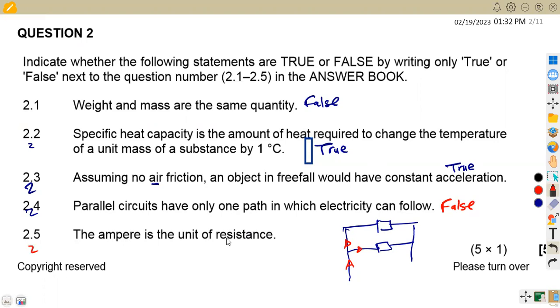The ampere is the unit of resistance. This is false. The ampere is the unit of current, and resistance is measured in ohms. So this is false. Ampere is for current, resistance you use ohms.